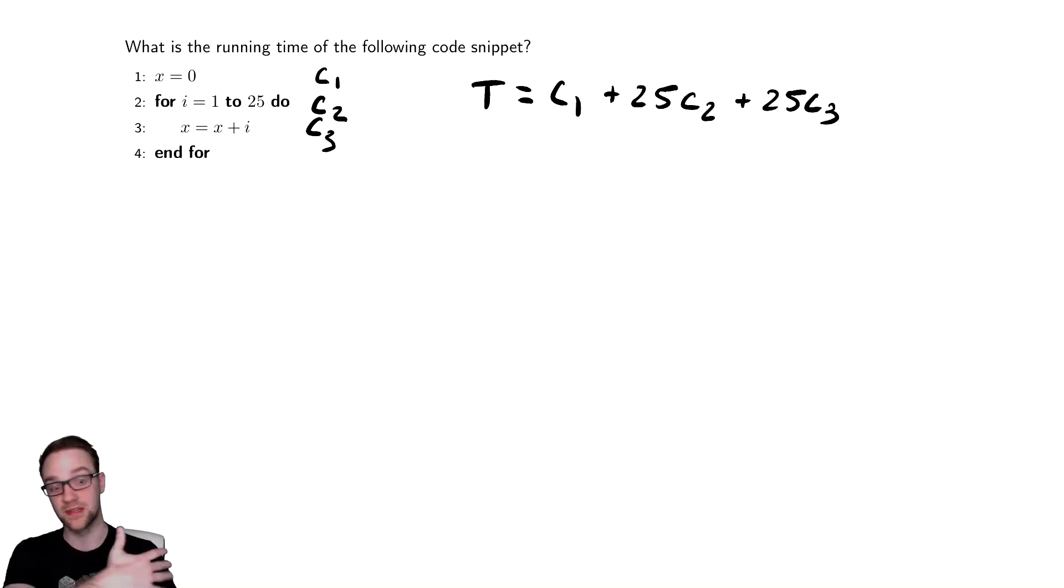You could theoretically look up these constants though. You could Google for your specific set of hardware, how long does assignment take? How long does adding take? How long does less than equal to take? How long does retrieval take? How long do each of the things that the code must do take? And then directly time it.